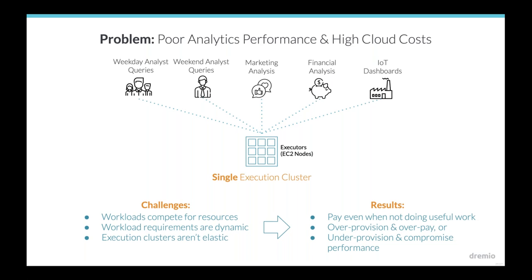Now let's get into what's new and different with this edition that really drives more performance and lowers cloud infrastructure cost. The current state: in general, people building software and services in the cloud tend to be built around single execution clusters. You've got a cluster with a bunch of executors — EC2 nodes in the AWS case — and all these different query workloads and processing workloads hit that same set of executors.